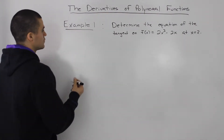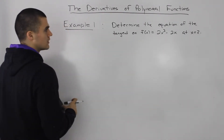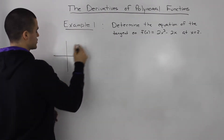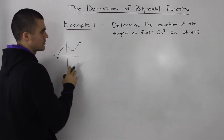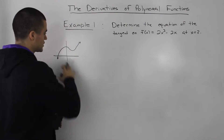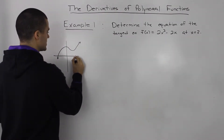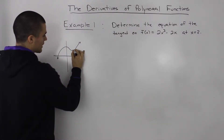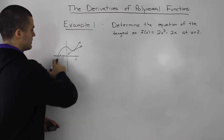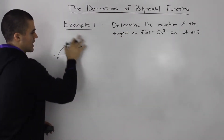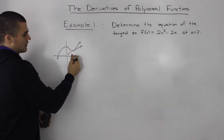Determine the equation of the tangent. The tangent is a line, so we're going to have to find y equals mx plus b. Let's assume we have this function and it looks something like this — it probably looks different, but I just want to give you a visual so you can see the process. We want to find the equation of this tangent at x equals 2.